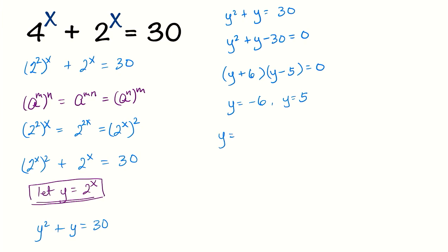We get 2 raised to the x equals negative 6, and 2 raised to the x equals 5. But 2 raised to the x is greater than 0, since a positive number raised to an exponent is always greater than 0. We can eliminate 2 raised to the x equals negative 6, since negative 6 is less than 0.